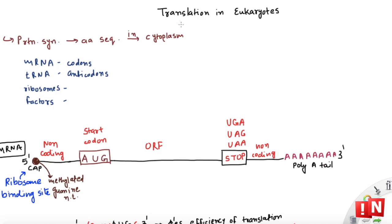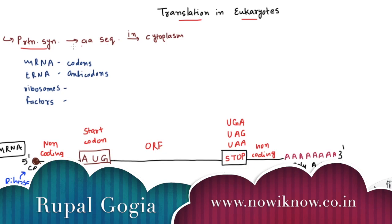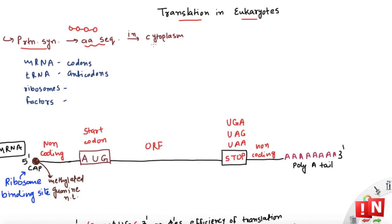Welcome back. Today we are talking about translation in eukaryotes. Translation is the process of protein synthesis — a process where protein is synthesized. Protein is nothing but a sequence of amino acids linked together by peptide bonds. In eukaryotes, translation occurs in the cytoplasm.